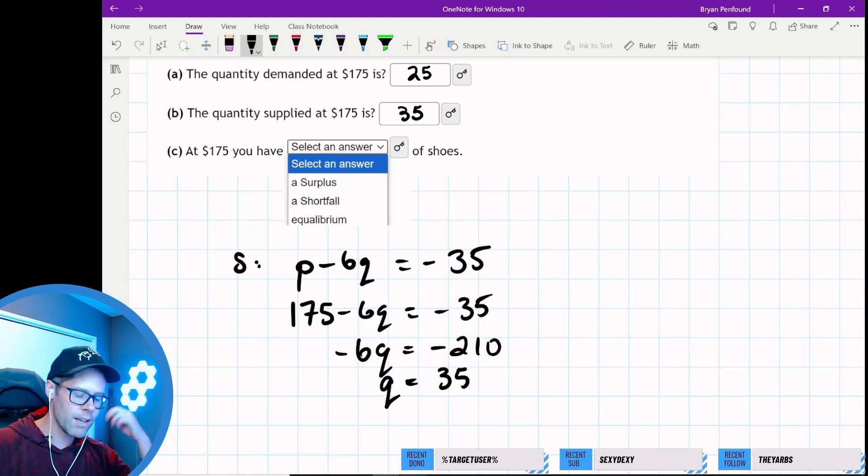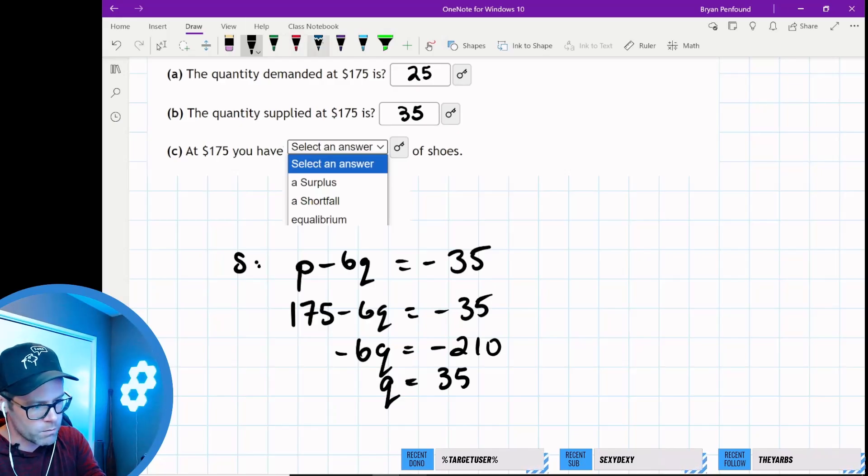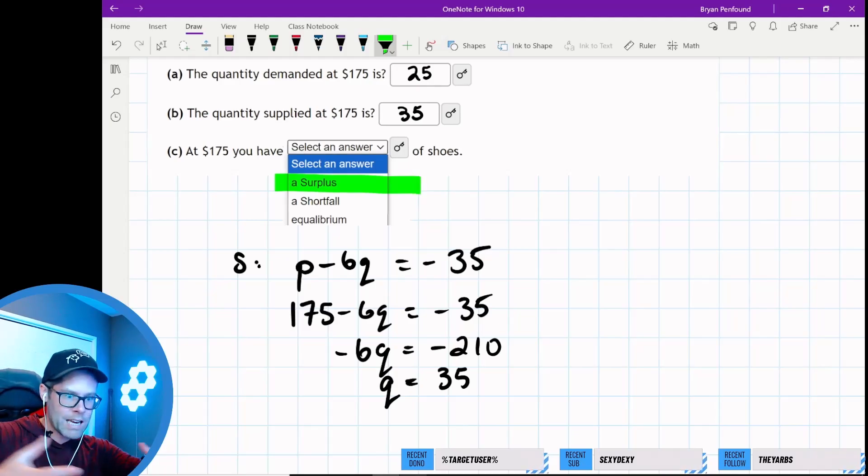At $175, we have either a surplus, shortfall, or equilibrium. It's not equilibrium because the quantity demanded is less than quantity supplied. We'll supply 35 items, but only 25 will be picked up, so we have a surplus of 10 items. If quantity supplied is higher, we have a surplus. If lower than quantity demanded, we have a shortfall. If demand and supply are equivalent, we're at equilibrium.